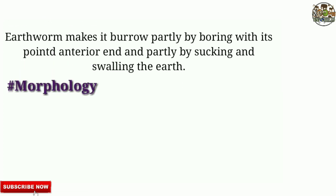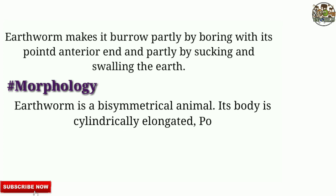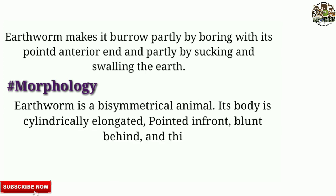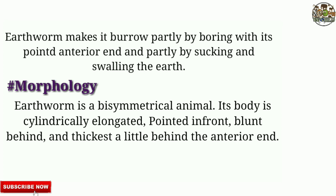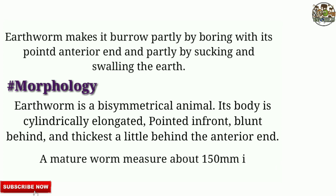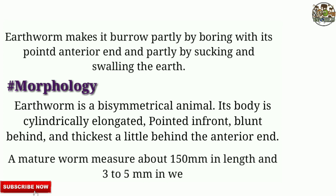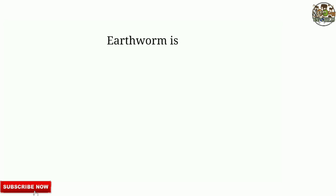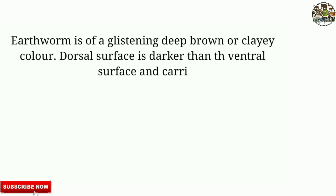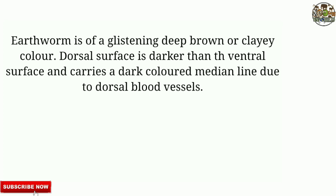Morphology: Earthworm is a bilaterally symmetrical animal. Its body is cylindrically elongated, pointed in front, blunt behind, and thickest a little behind the anterior end. A mature worm measures about 150 mm in length and 3–5 mm in width. Earthworm is of glistening deep brown or clayey color. The dorsal surface is darker than the ventral surface and carries a dark-colored median line due to the dorsal blood vessel.